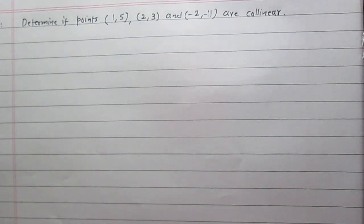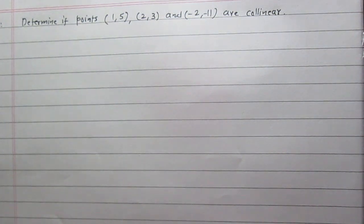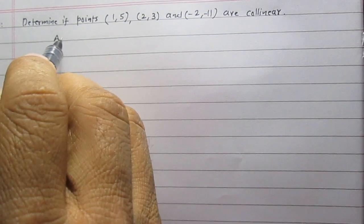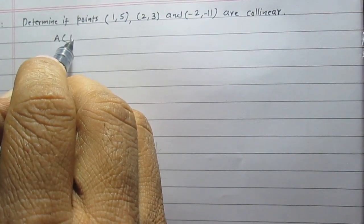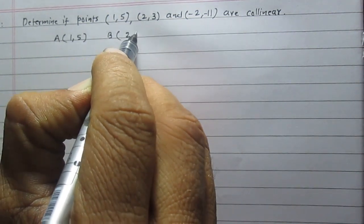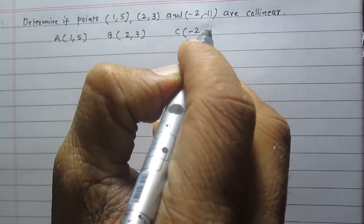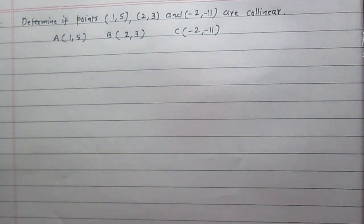Determine if the points with coordinates (1, 5), (2, 3), and (-2, -11) are collinear. We are given 3 points. Let us consider point A with coordinates (1, 5), point B with coordinates (2, 3), and point C with coordinates (-2, -11). We are to check whether these 3 points A, B, and C are collinear or not.